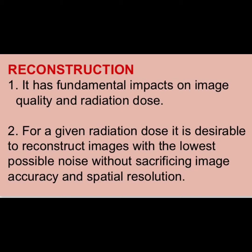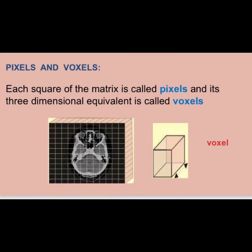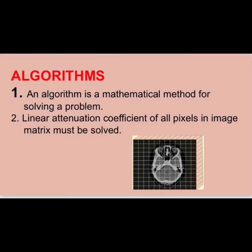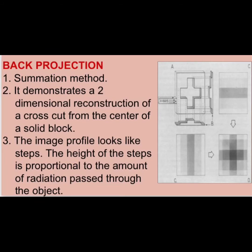Without sacrificing image accuracy and spatial resolution. Pixels and voxels: each square of the matrix is called a pixel, and its three-dimensional equivalent is called a voxel. An algorithm is a mathematical method for solving a problem. The linear attenuation coefficients of all pixels in the image matrix must be solved.